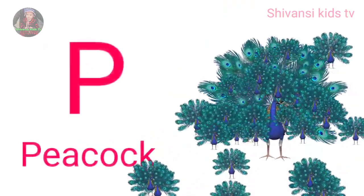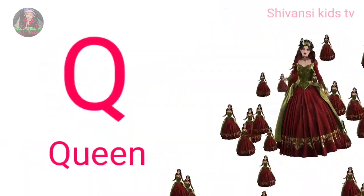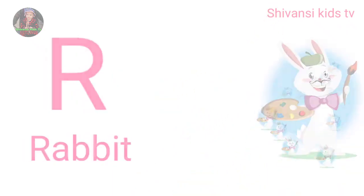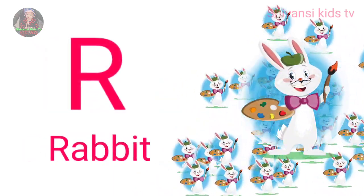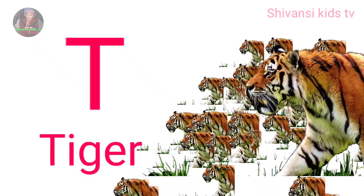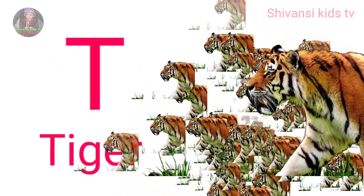P for peacock, Q for queen, R for rabbit, S for sheep, T for tiger.